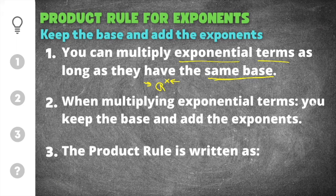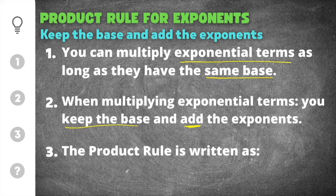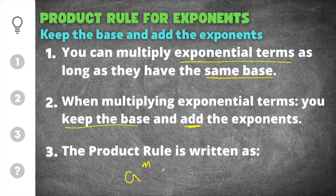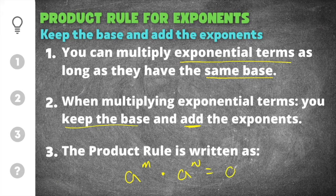When multiplying exponential terms you keep the base the same and will add the exponents. Now the product rule is written as a to the m times a to the n is equal to a to the m plus n.